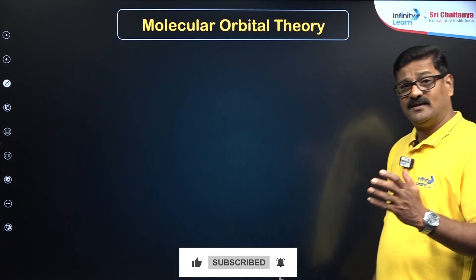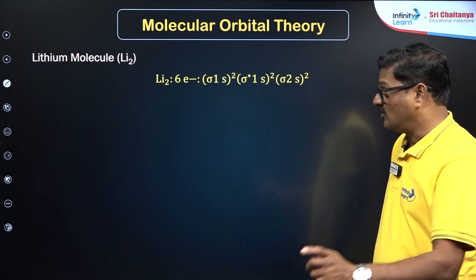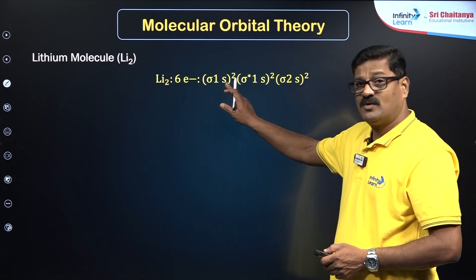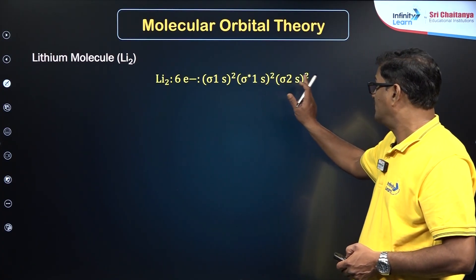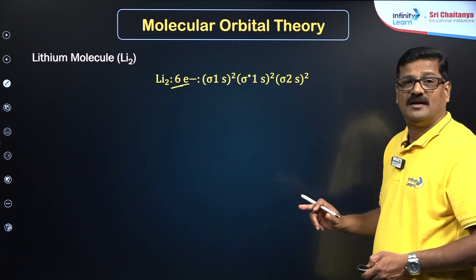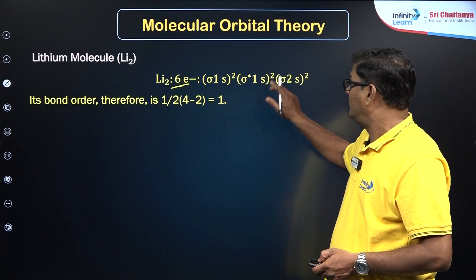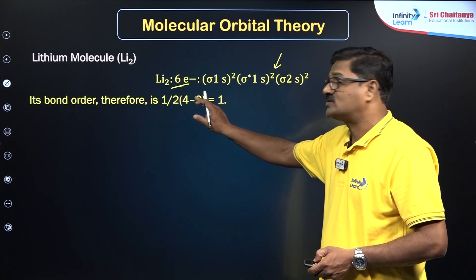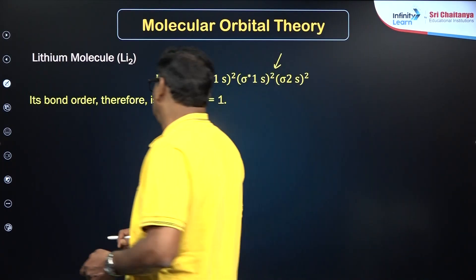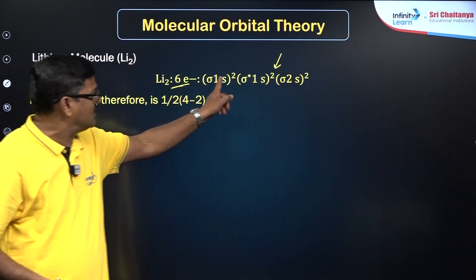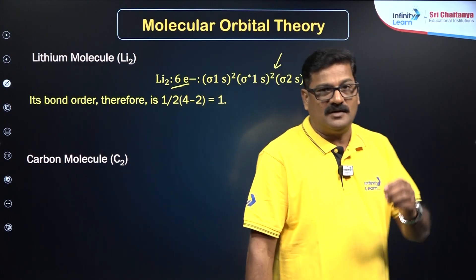For the lithium molecule Li₂, two lithium atoms give six electrons. The configuration is σ1s² σ*1s² σ2s². Bonding electrons = 4, antibonding electrons = 2, so bond order = (4 − 2)/2 = 1 — a single bond exists. There are no unpaired electrons, so Li₂ is diamagnetic.